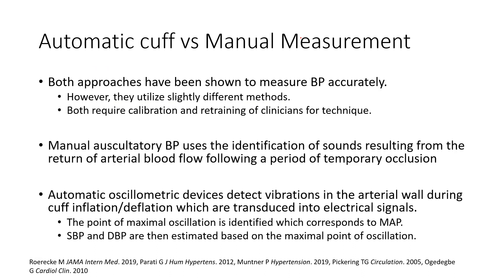Just a brief thing to remember: there are arguments about automatic cuffs versus manual cuffs for blood pressure measurement. They're both equally accurate for measuring baseline blood pressure at rest. They use different techniques — manual measurements are based on the identification of sounds, the Korotkoff sounds, which appear after we return blood flow into the artery after occluding it with a cuff. The vessel wall vibrates and produces sounds that we can hear. Automatic oscillometric devices use those same vibrations, but we're not perceiving sound — that device detects vibrations and transduces them into electrical signals to identify the point of maximal oscillation, which corresponds to mean pressure. Since mean pressure follows the calculation of two times diastolic plus one systolic, we can use the mean to calculate systolic and diastolic from that estimate. They use different properties but are both equally reliable for measuring resting blood pressure.